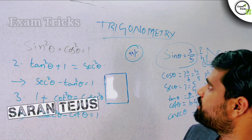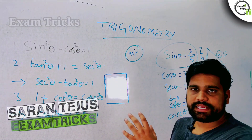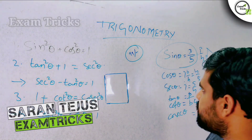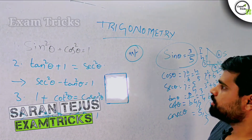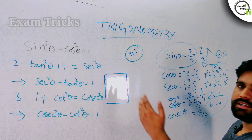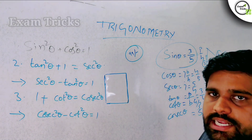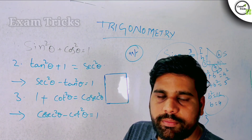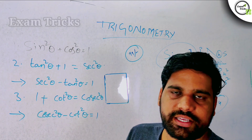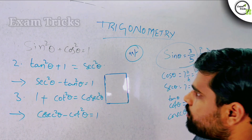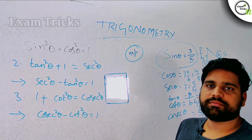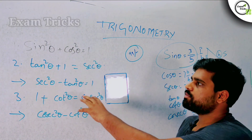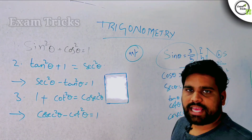Hi friends, today we are going to talk about trigonometric class 2, part 2. In the last video, we talked about trigonometric ratios, Pythagoras theorem, and we talked about these formulas and identities.